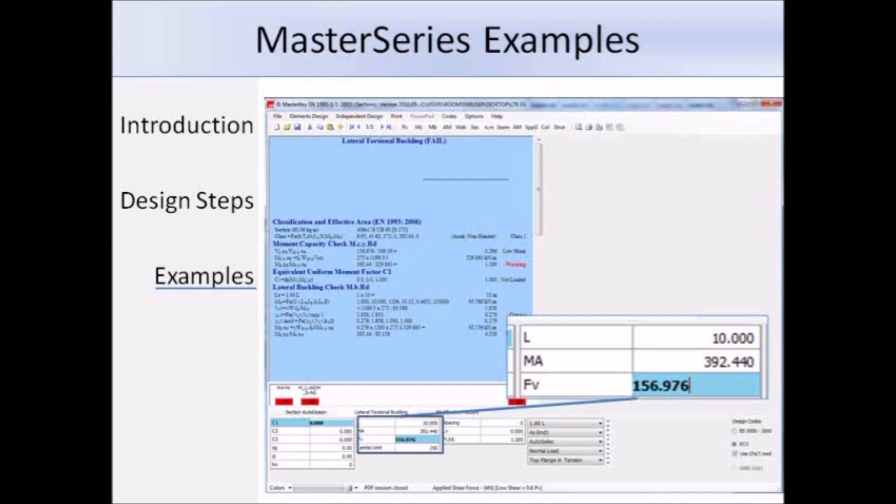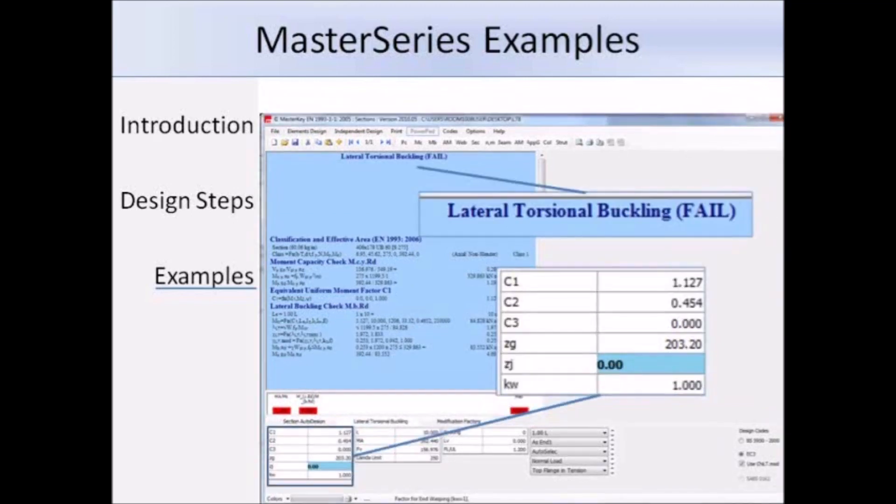One of the main advantages of using software is that it allows us to easily change the section, and we can see the updated results immediately. So here in MasterSeries, there's an option to auto size the member, and once we've selected that, the screen turns back to white, so we know that this section is suitable. The 406 times 178 times 60 UB in grade S275 steel didn't work. Instead, MasterSeries has selected the 457 times 191 times 161 UB in S275 steel, which is suitable. So that's the advantage of using software, especially for checking LTB, since the calculations can be quite long.